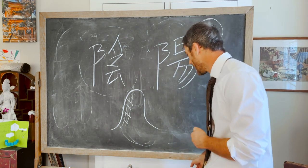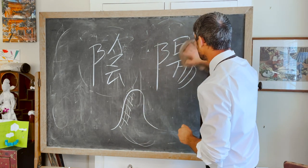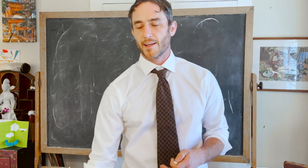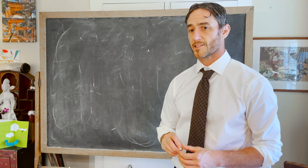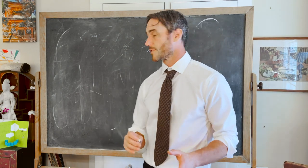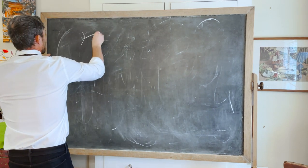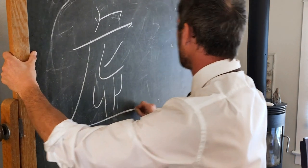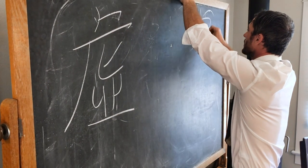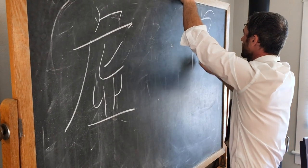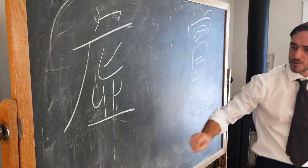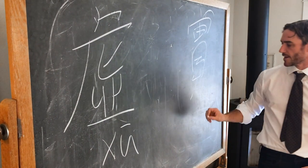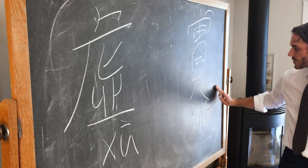However, there was an earlier cosmological pairing, one that preceded yin and yang. That is the concept of emptiness and fullness. Emptiness is written one way and fullness is written like this. The character xu refers to emptiness, and shi is fullness.